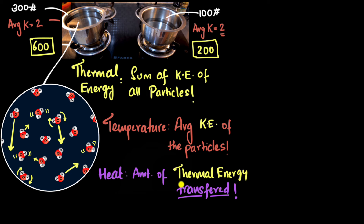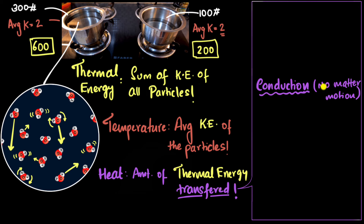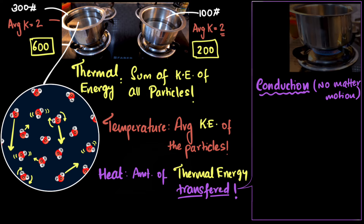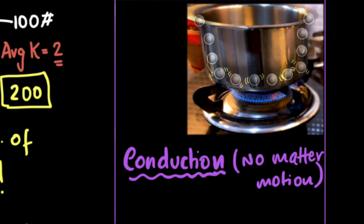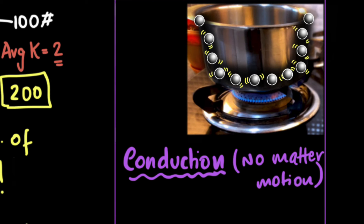One question is how do you transfer thermal energy? There are actually three ways. The first is conduction, where you transfer thermal energy without the particles themselves moving. For example, the atoms at the bottom of the vessel have high thermal energy because they're in direct contact with the flame. That thermal energy gets transferred because the jiggling particles come in contact and make the particles next to them jiggle, and then those make the next ones jiggle, and so on. Thermal energy is transferred, but the matter itself did not move from one place to another. That's what we call conduction.